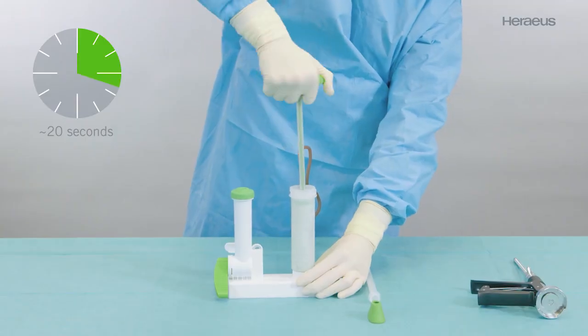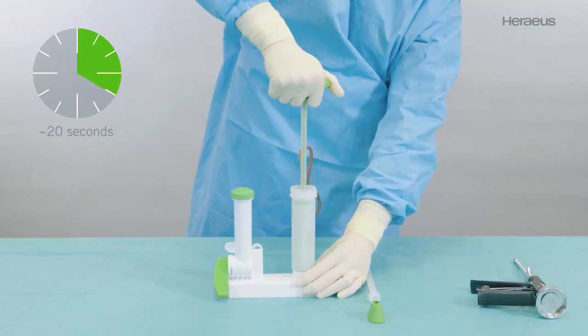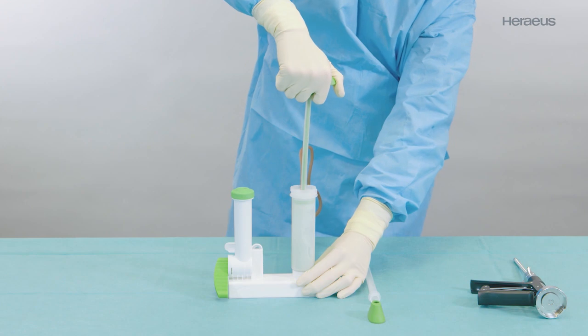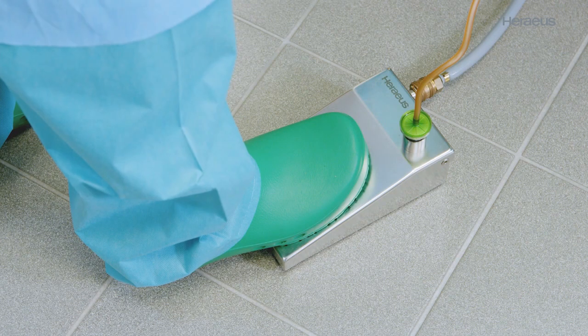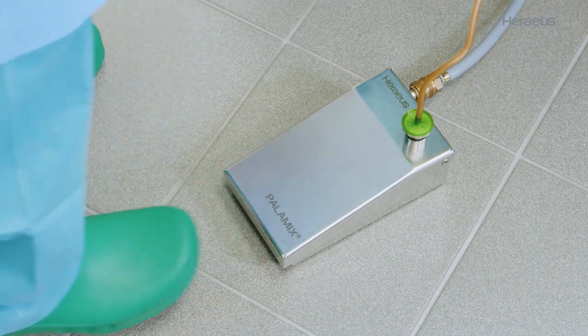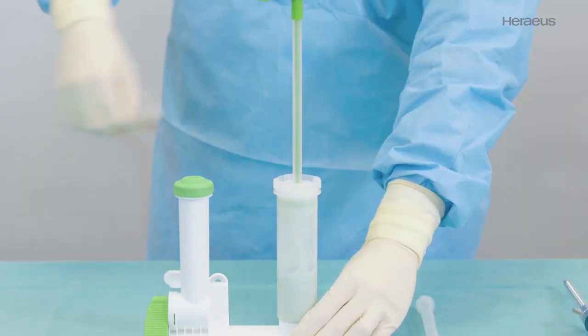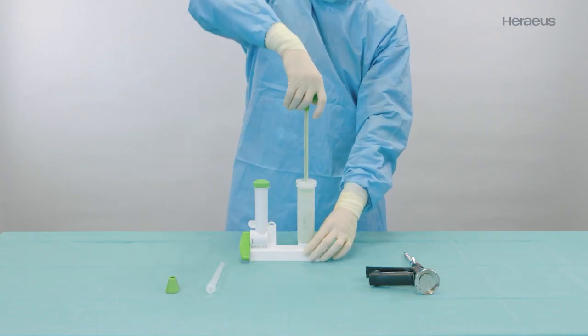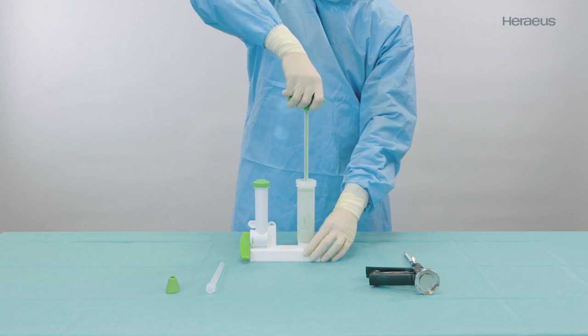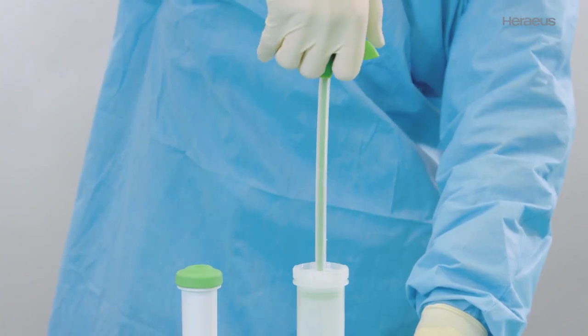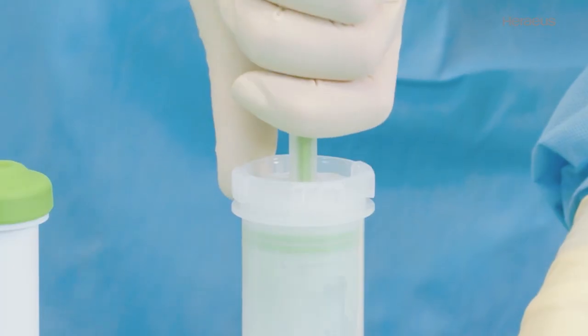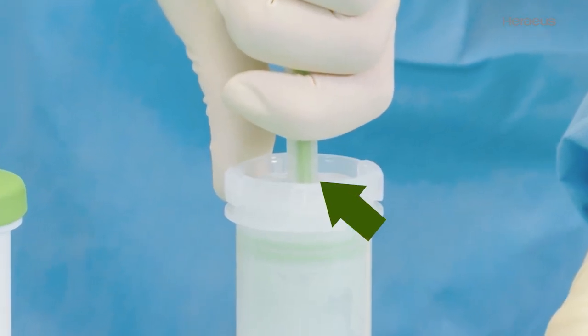Pull up the mixing rod until it stops and turn it to the right and left briefly. Switch off the vacuum pump and remove the vacuum hose from the mixing head. Ensure that the mixing rod is still pulled up to the stop. Break the mixing rod off the mixing head at the predetermined breaking point.